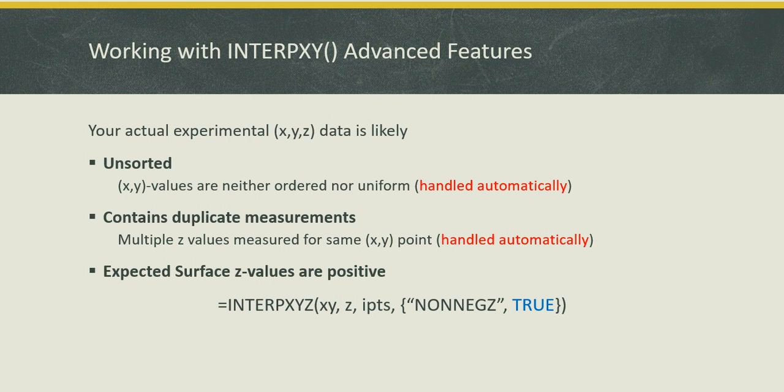Another useful feature is to filter negative values. If you know, for example, that your surface should be all positive, you can use the constrain non-negative Z by setting its value to true in optional parameter number 4, as shown in the formula.